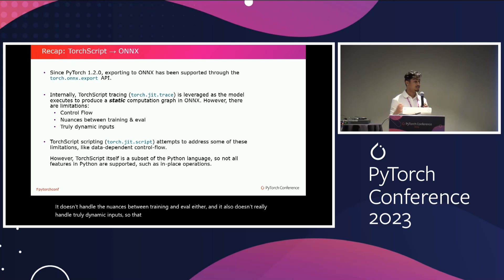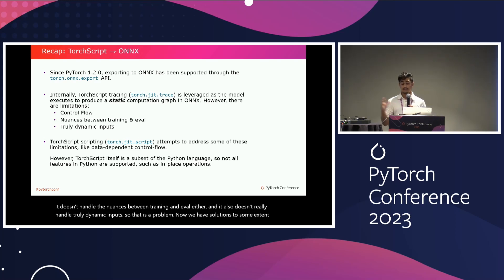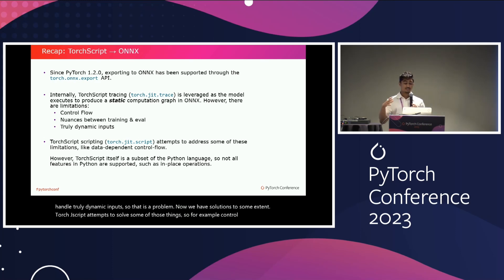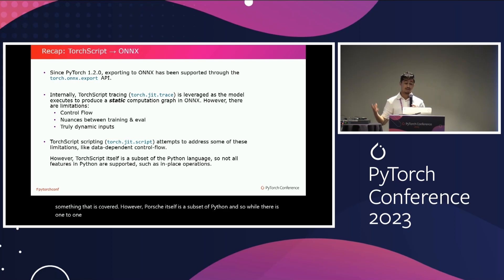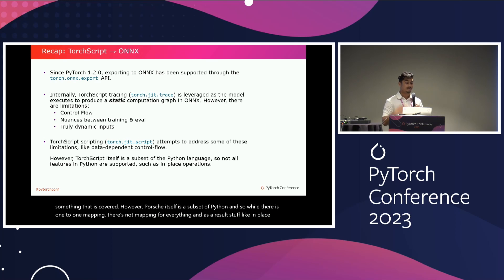We have solutions to some extent. torch.jit.script attempts to solve some of those things — for example, control flow is covered. However, TorchScript itself is a subset of Python, and while there is one-to-one mapping for some things, there's not mapping for everything. As a result, things like in-place operations are sometimes left aside. This isn't great.